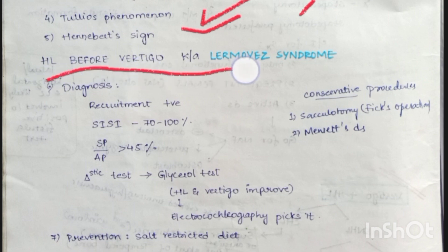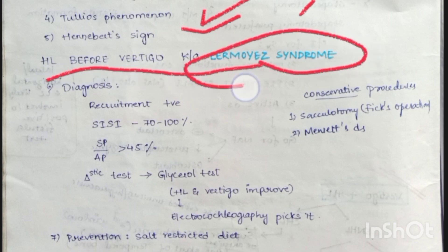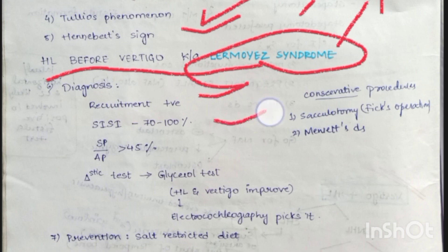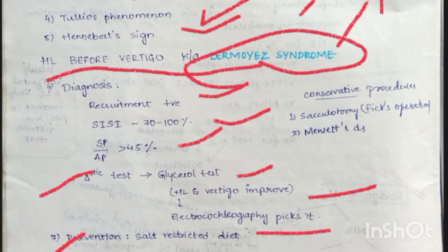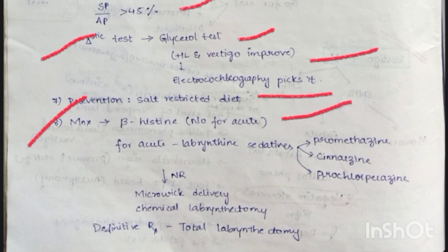Hearing loss before vertigo is known as Lermoyez syndrome — a variant of Meniere's disease. Diagnosis: recruitment test is positive, SI-SI index is 72–100, SP/AP ratio is greater than 45%. The diagnostic test is glycerol test — hearing loss and vertigo improve, picked up by electrocochleography. Prevention: salt-restrictive diet. Management: betahistine (not for acute cases); for acute, give labyrinthine sedatives — promethazine, cinnarizine, prochlorperazine.